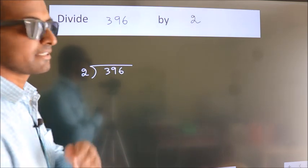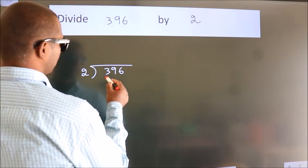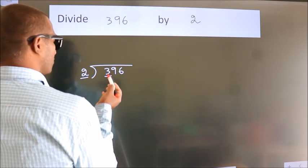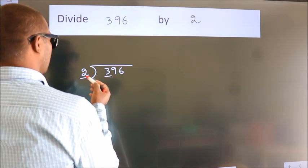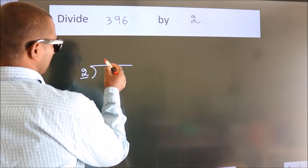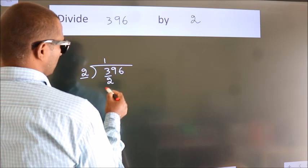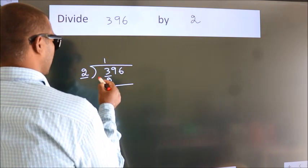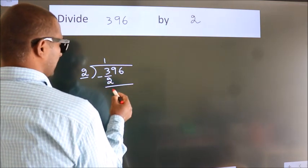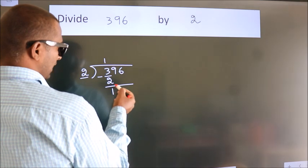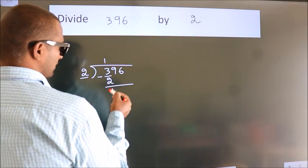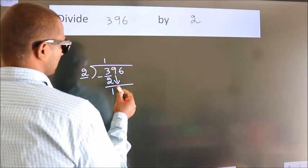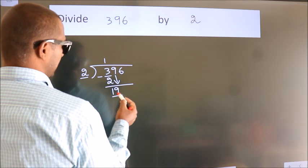Next, here we have 3, here 2. A number close to 3 in the 2 times table is 2 ones — 2. Now we should subtract; we get 1. After this, bring down the beside number. So 9 comes down, giving us 19.